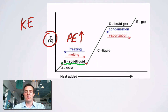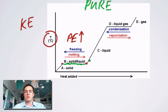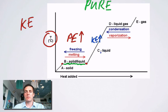Notice that until all the solid has turned to liquid, the temperature won't rise. Bear in mind this is for a pure substance. Once we get past that point, the temperature starts to rise again, meaning the kinetic energy is on the way up. The potential energy isn't rising because we're staying in the liquid state — the particles are just about the same distance from one another — but they're starting to move faster and faster, so their temperature is going up.